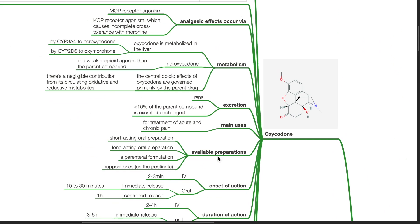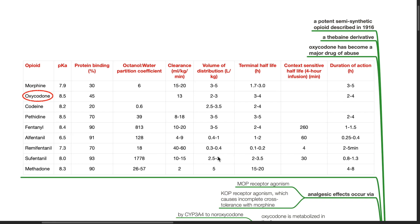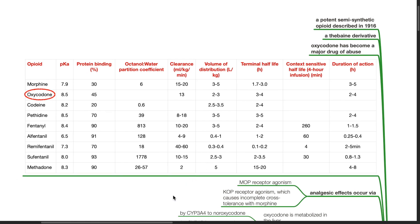Oxycodone. Oxycodone is a potent semisynthetic opiate described in 1916. It is a thebaine derivative and has become a major drug of abuse.